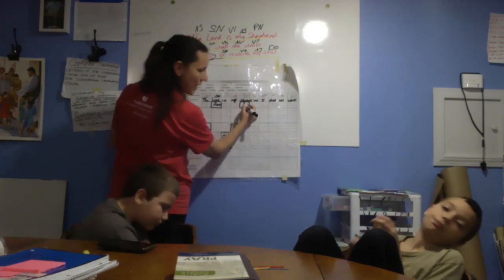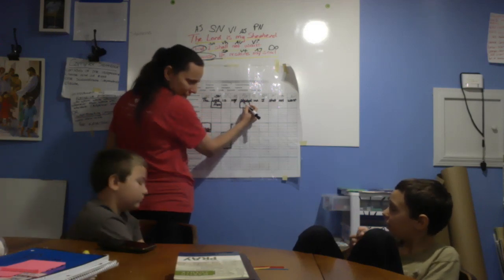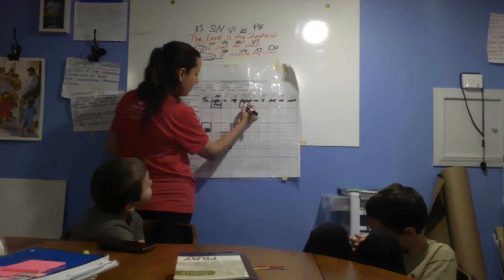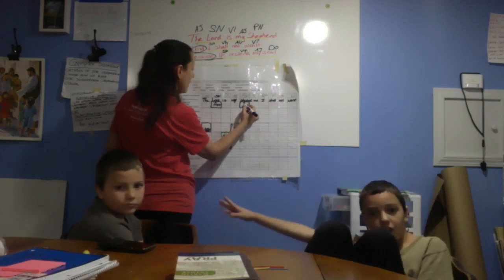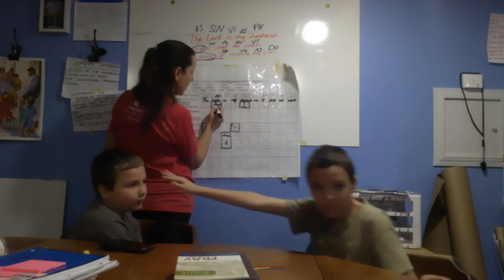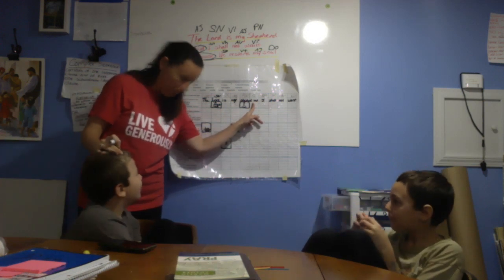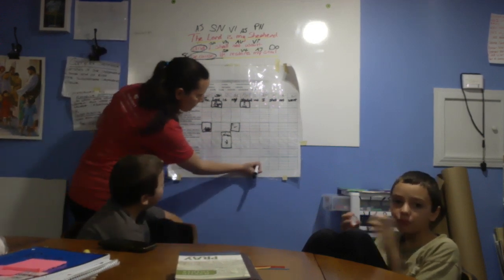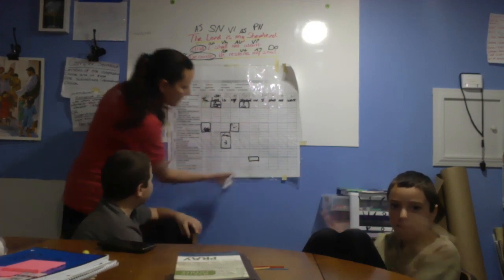Is it concrete or abstract? I forgot to ask that about Lord. Concrete. Because you can see and touch a shepherd. So concrete. And Lord is also concrete. And — Peter, what's the word 'and'? Conjunction. It's a conjunction. What do we do with conjunctions? We go way down here in that little box. And it's coordinating.